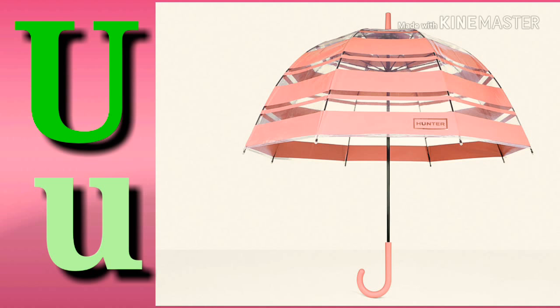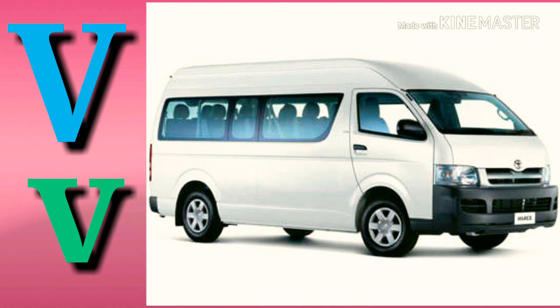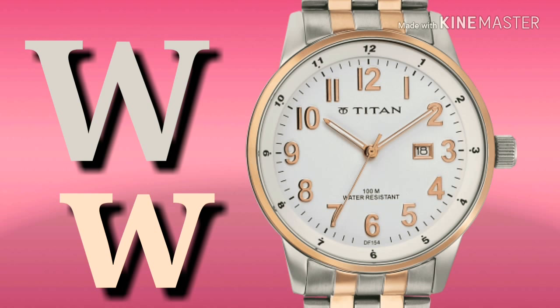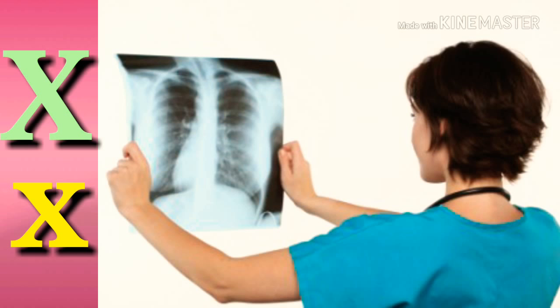U is for umbrella, u-u-umbrella. V is for van, v-v-van. W is for watch, w-w-watch. X is for x-ray, x-x-ray.